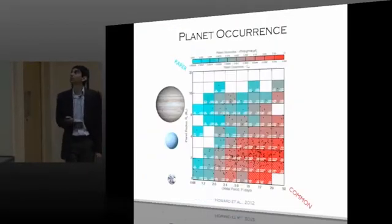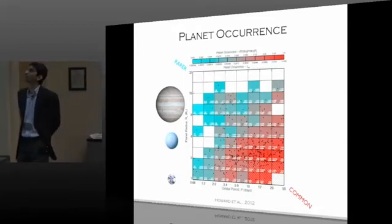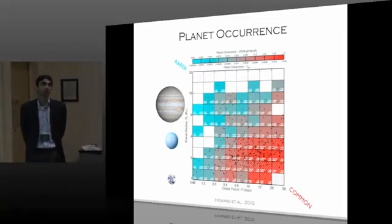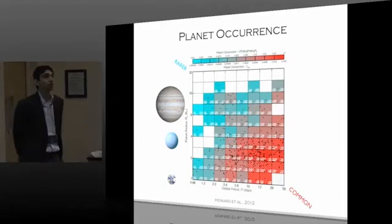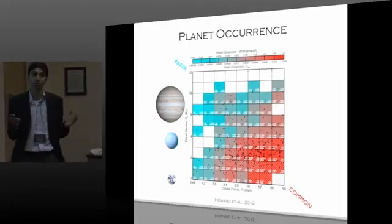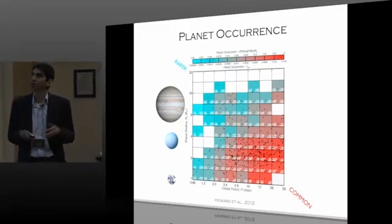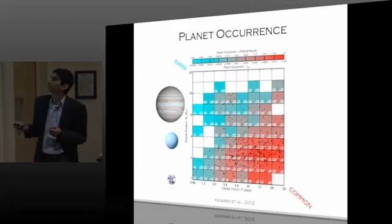So here's a plot which tells you about the planet occurrence as a function of planet radius and orbital period. And it accounts for the observational biases. So what we now know is that you do have a lot of large planets the size of Jupiter, but you also have a larger size of planets which are of the size of Neptune. And you have even more planets which are of the size of Earth indicated by this color code.